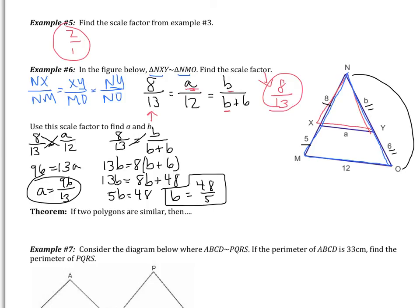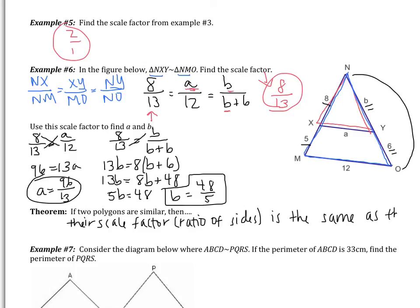Here's a key theorem: if two polygons are similar, then their scale factor — the ratio of the sides — is the same as the ratio of their perimeters. So whatever the ratio of the sides is, the ratio of the perimeters is exactly the same.